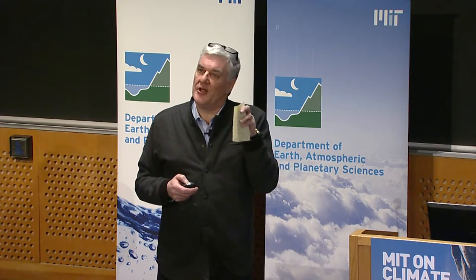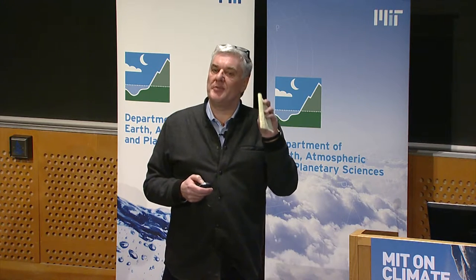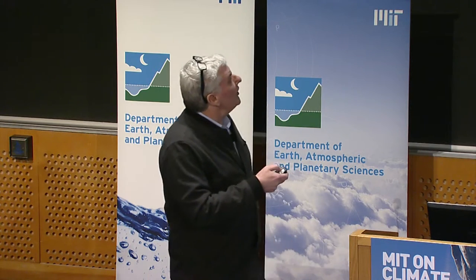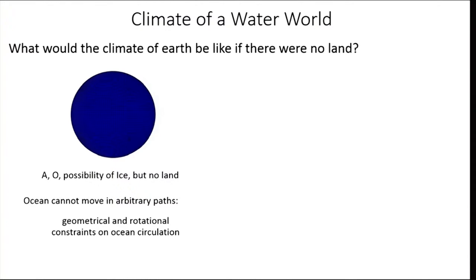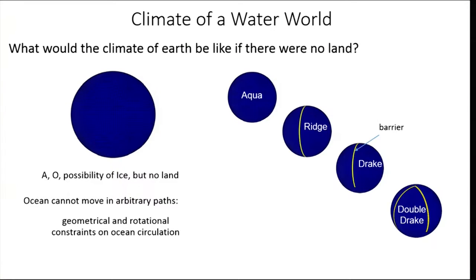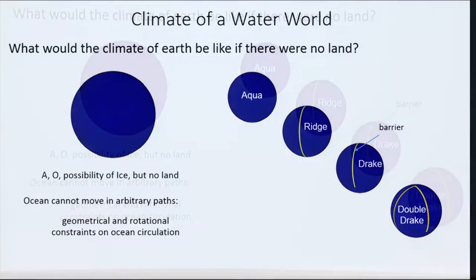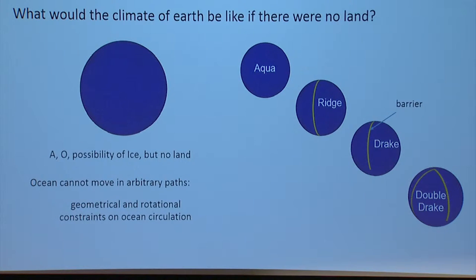One of the things about the ocean is that it's in ocean basins — constrained geometrically by coasts. The ocean can't move in arbitrary paths; there are geometrical and rotational constraints on ocean circulation, rotation meaning Earth's rotation. We can put this kind of information into the system by introducing barriers. So I'm going to consider an aquaplanet — a pure aquaplanet — which is an ocean a few kilometers deep with a flat bottom and no land. Then I can introduce a ridge, which is a barrier going from the North Pole to the South Pole.